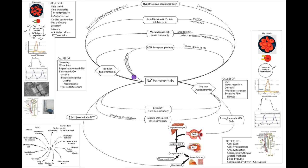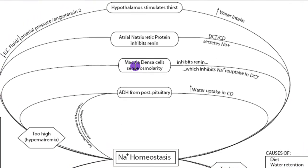Now let's look at what happens if there's too much sodium. The JG cells and MD cells will again play a major role. If there's too much sodium, there's probably going to be too much water, meaning there will be stretch in the JG cells, and they're going to stop releasing renin in response to that stretch.